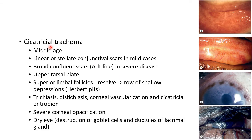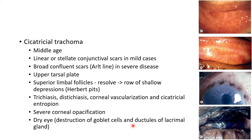Cicatricial trachoma is usually seen in middle age. There can be linear or stellate conjunctival scars in mild cases, or broad confluent scars — called Arlt's line — in severe cases. It usually affects the upper tarsal plate. Superior limbal follicles resolve, leading to formation of shallow depressions called Herbert's pits. There can be trichiasis, distichiasis, corneal vascularization, and cicatricial entropion. Severe corneal opacification and dry eye can occur due to destruction of goblet cells and ductules of the lacrimal gland.